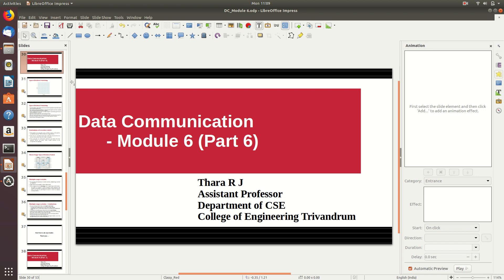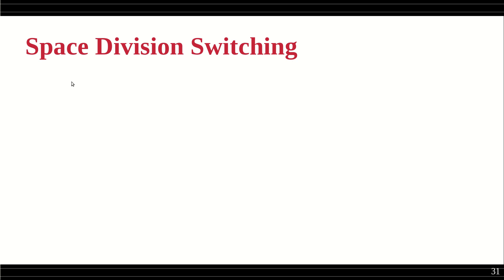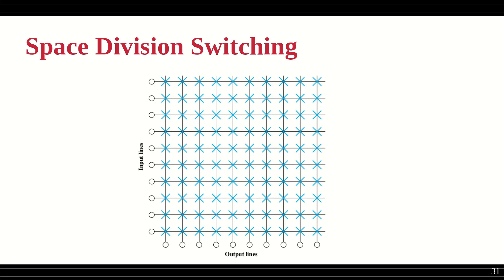Hello everyone, welcome to Part 6, Module 6: Data Communication. We were discussing the circuit switching concept so far. Now we will see some switch configurations. One straightforward approach is what is called a space division switch, which looks like a kind of direct connection. Here we have 10 input lines and 10 output lines.